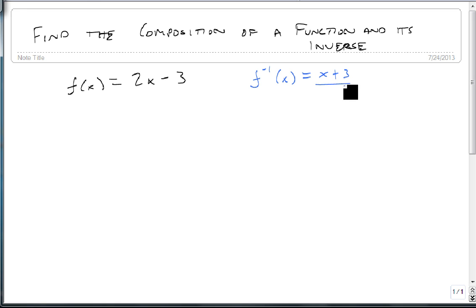So let's start by finding f of 7. If I were to find f of 7, I would get 2 times 7 minus 3, 14 minus 3, or 11. So this gives me the point (7, 11) for my function f.